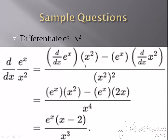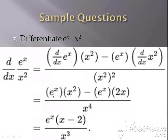In the numerator it becomes x² unchanged times the differentiation of eˣ, minus eˣ unchanged times the differentiation of x², which is 2x. Differentiation of eˣ is eˣ, so we get eˣ times x² minus eˣ times 2x. If you simplify and take common factors, this gives you the simplest form of the answer.